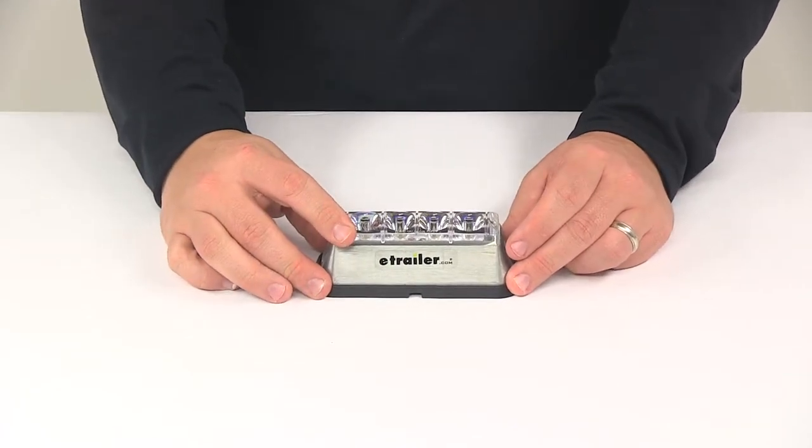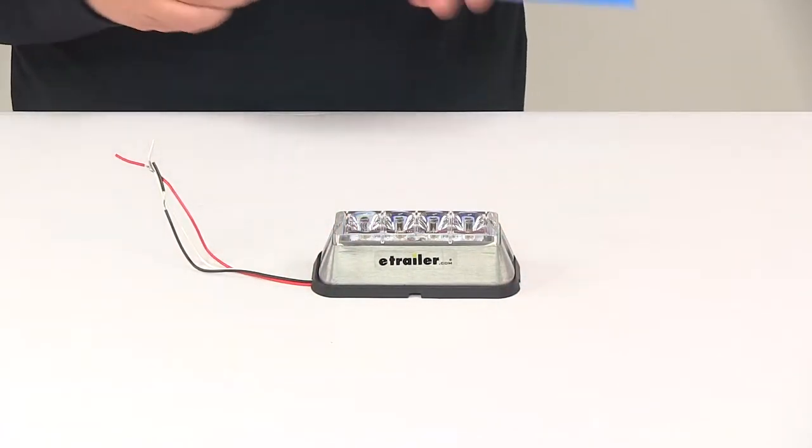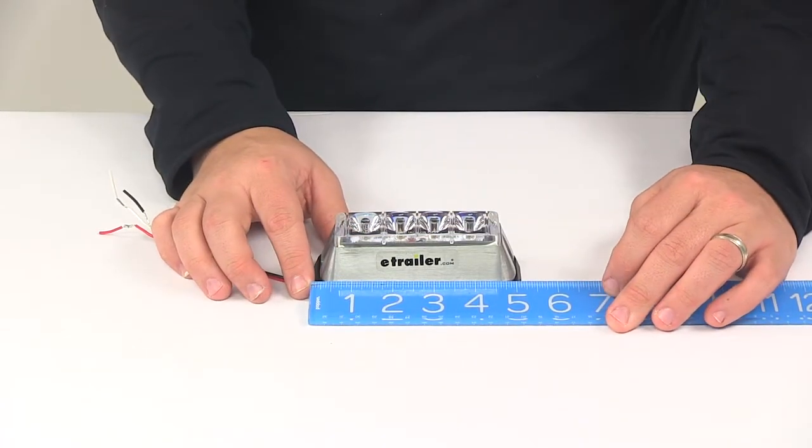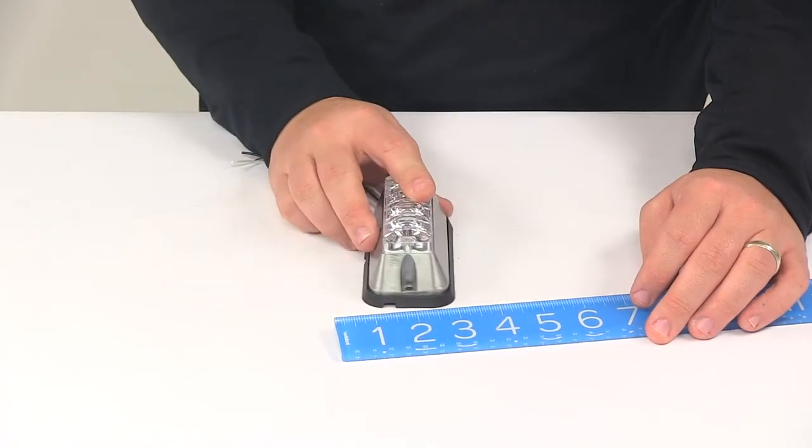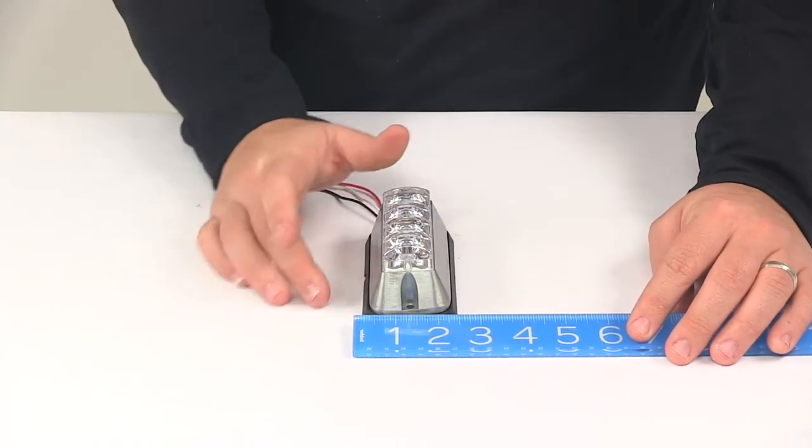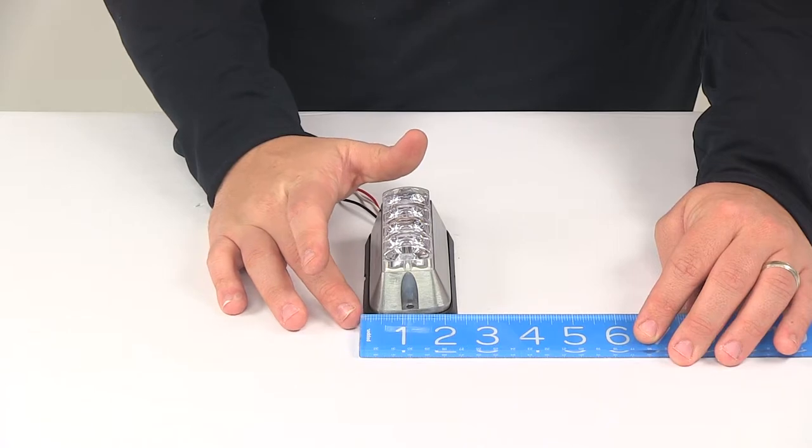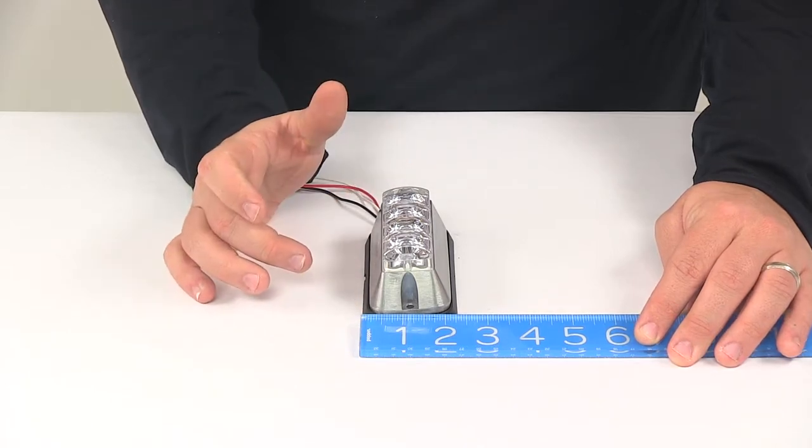A few measurements to go over real quick and then we'll hook it up to power. With the light on the bracket, that's going to give us a length measurement of about five and three sixteenths of an inch. Going this direction, that's going to give us a measurement of about two and five sixteenths of an inch.